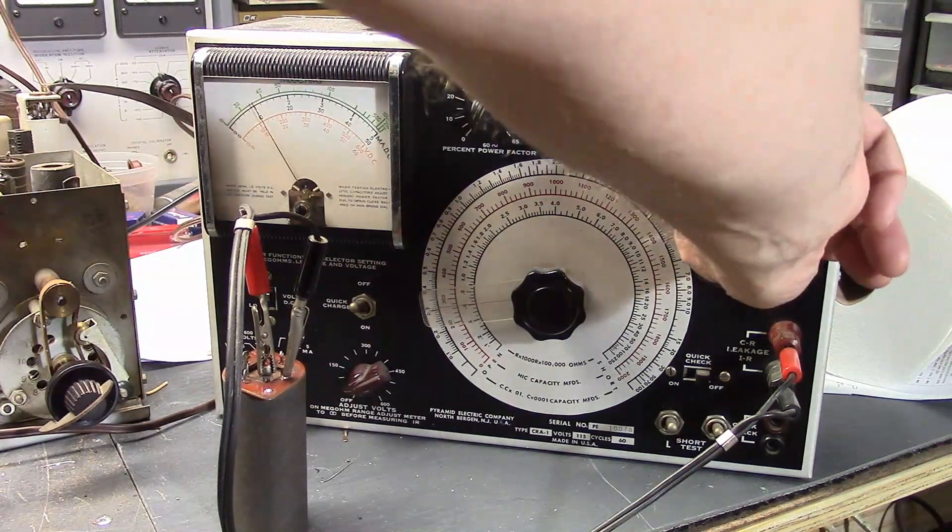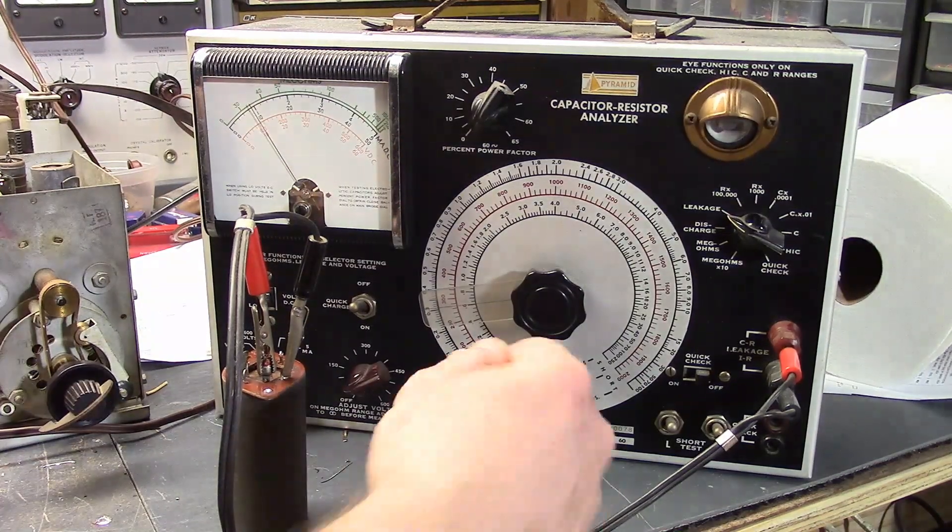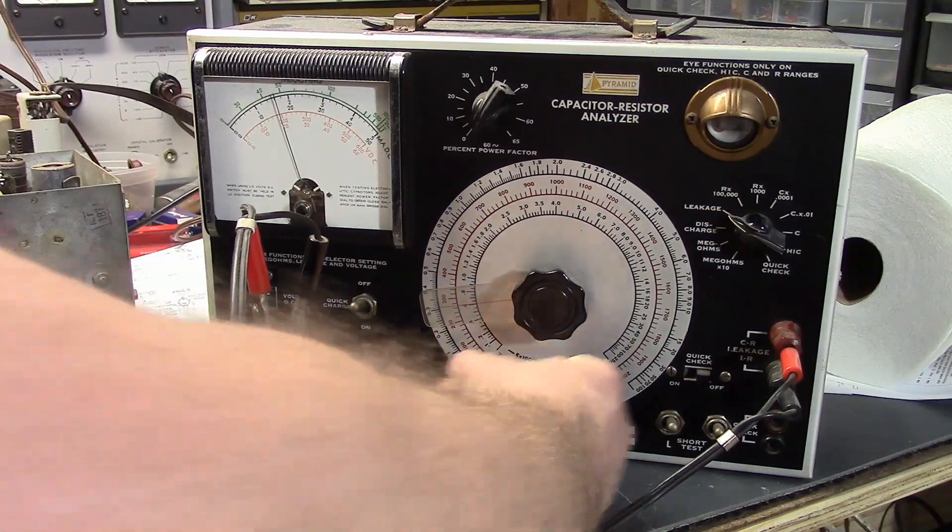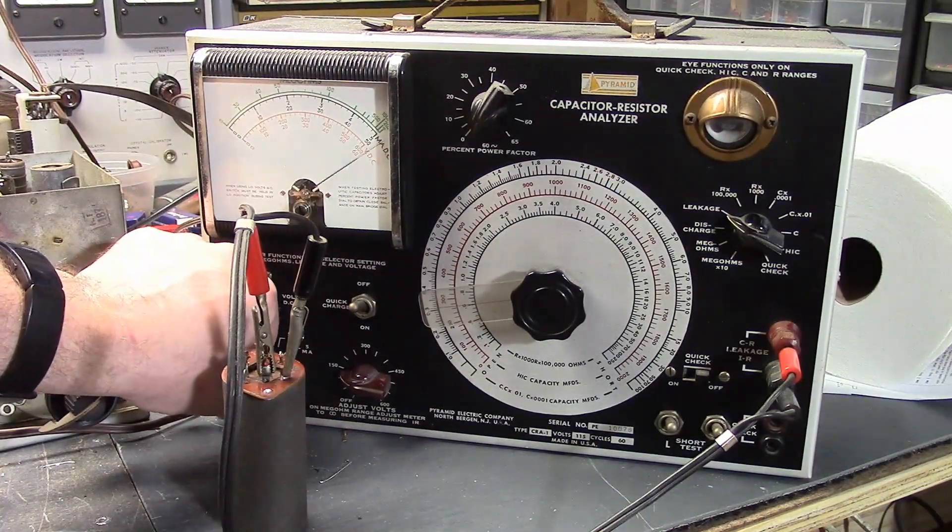So, let's go to the leakage, and right now, let's get it, 200 volts. And now we can check the leakage current. Wow.